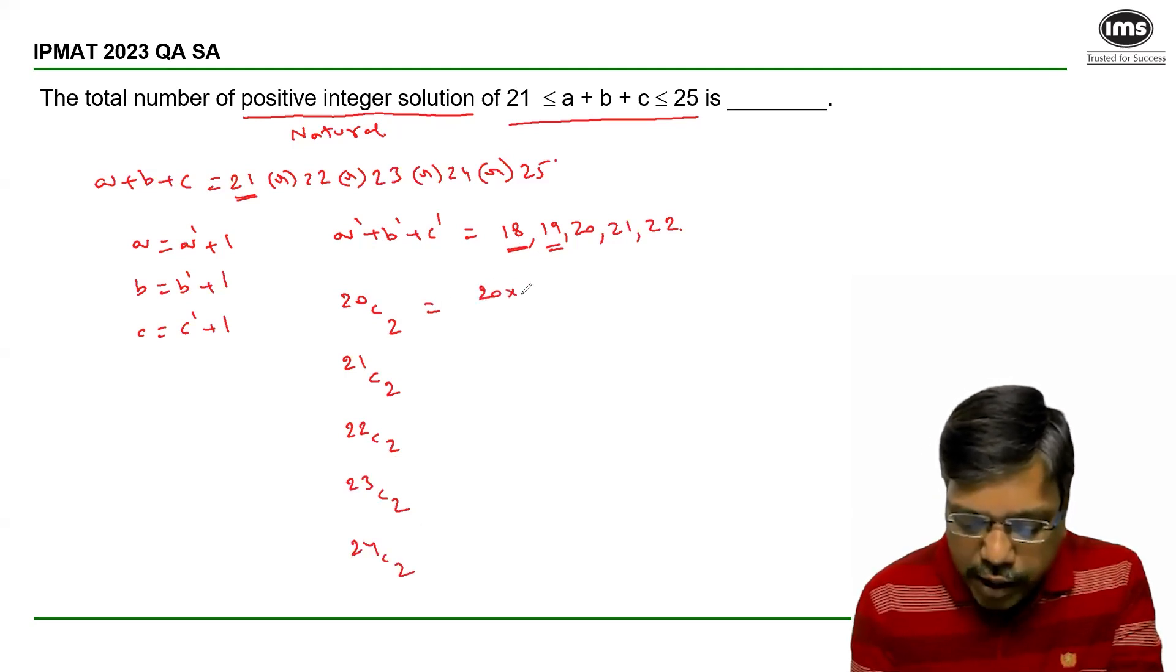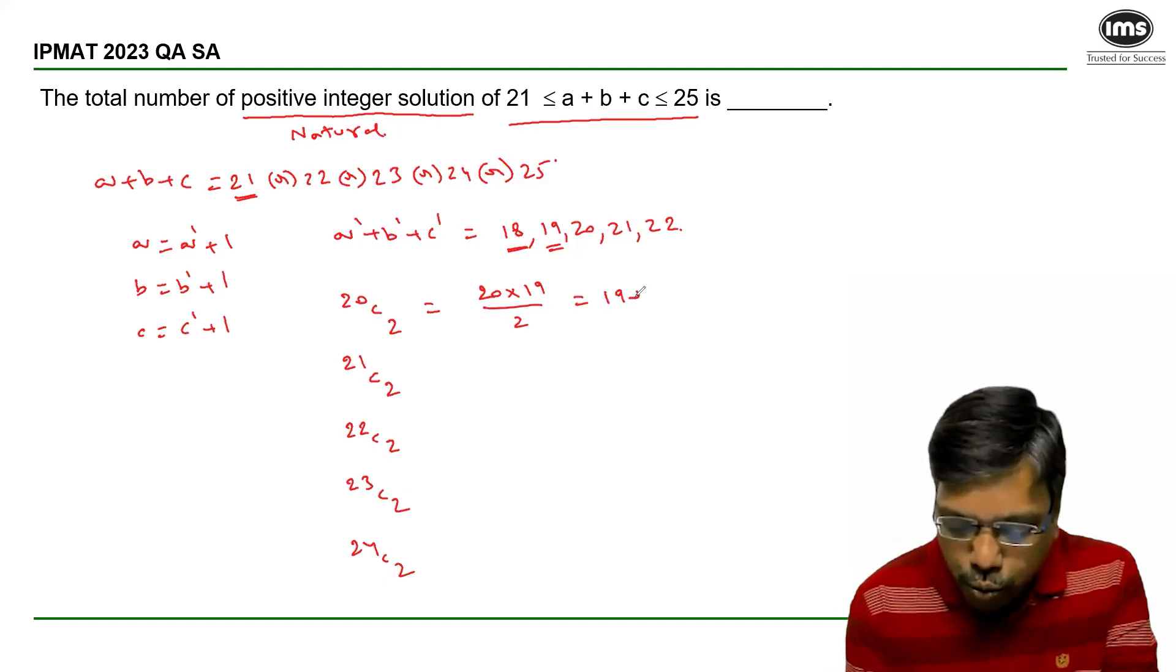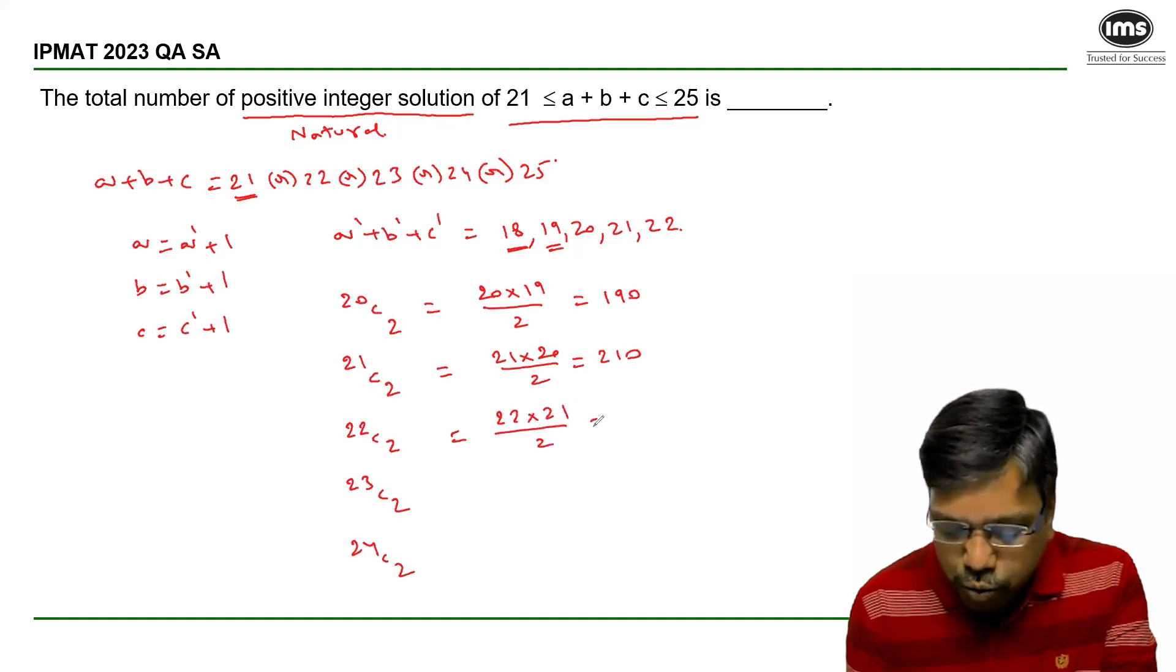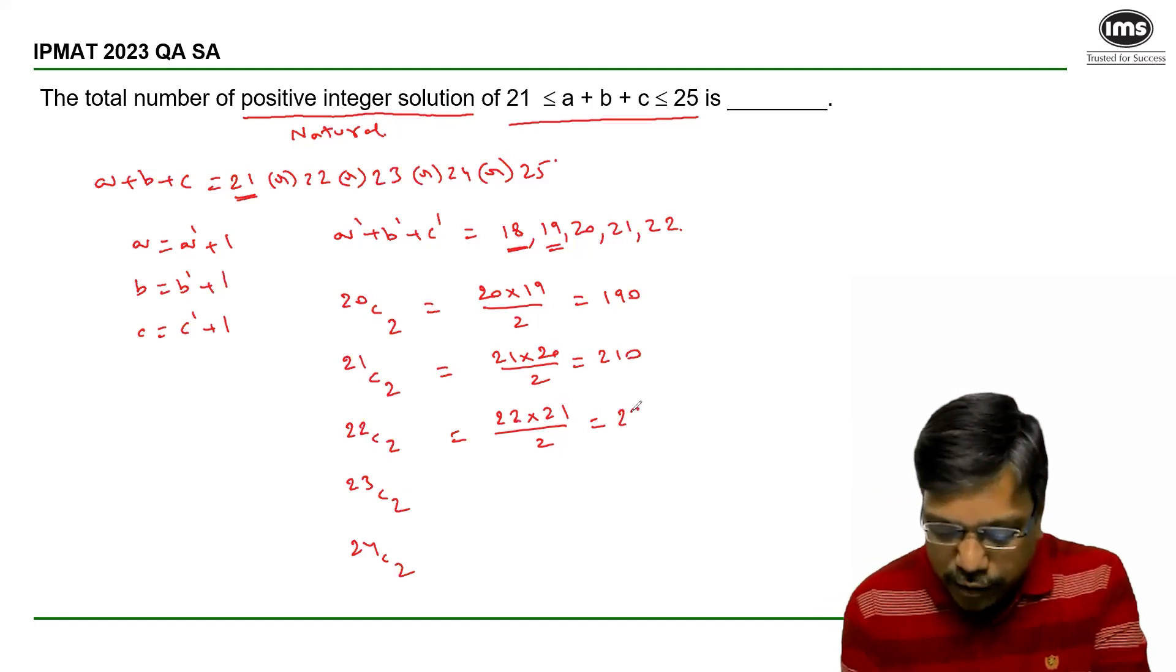Now, this is 20 × 19 / 2. 20 × 19 is 380, divided by 2 is 190. Then 21 × 20 / 2, which is 210. 22 × 21 / 2, that is 11 × 21, which is 231.